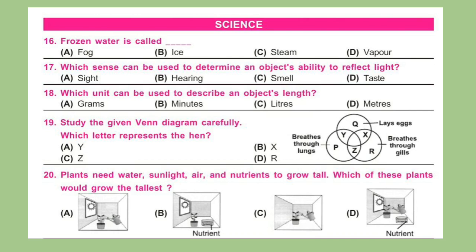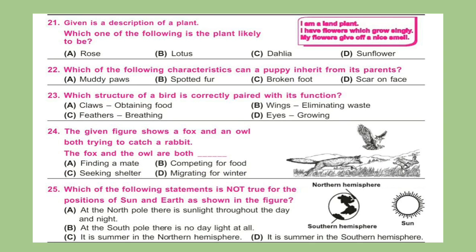Question 19: Study the given Venn diagram carefully. Which letter represents the hen? Question 20: Plants need water, sunlight, air and nutrients to grow tall. Which of these plants would grow the tallest? Question 21: Given is a description of a plant — I am a land plant, I have flowers which grow singly, my flowers give off a nice smell. Which one of the following is the plant likely to be?